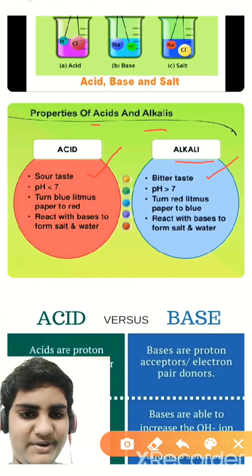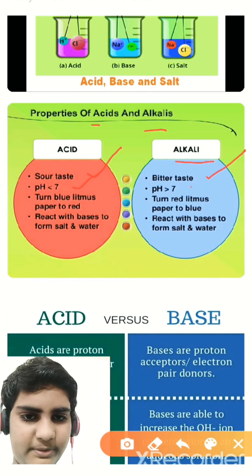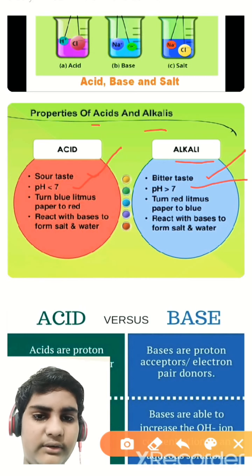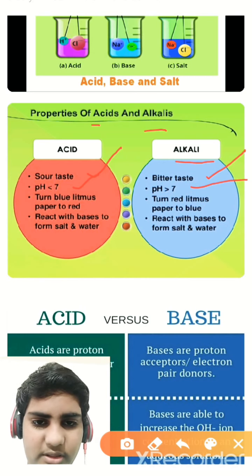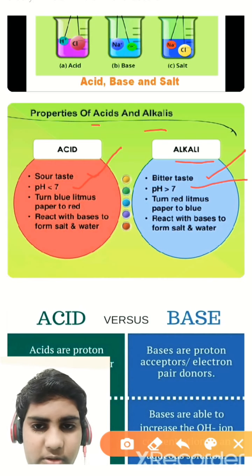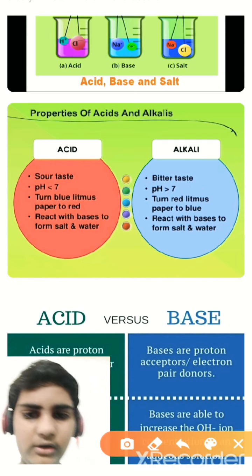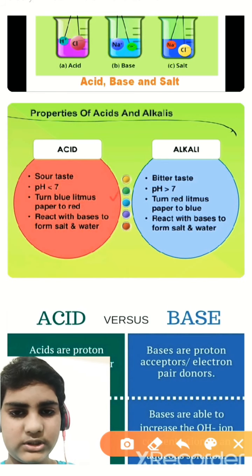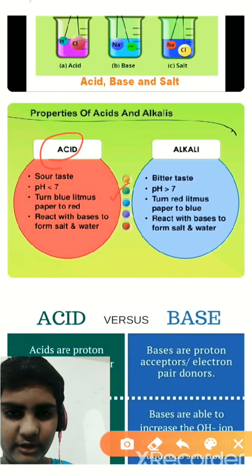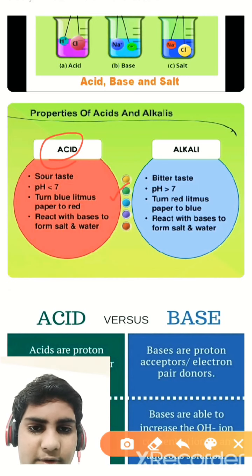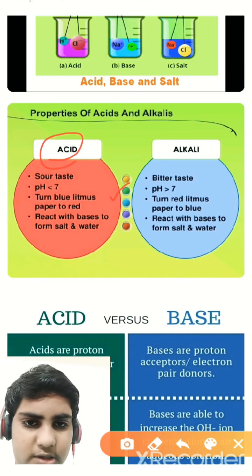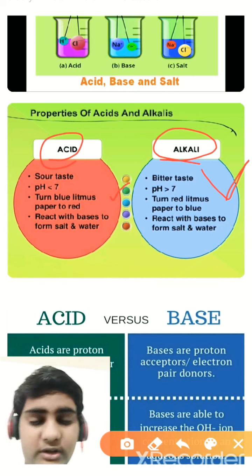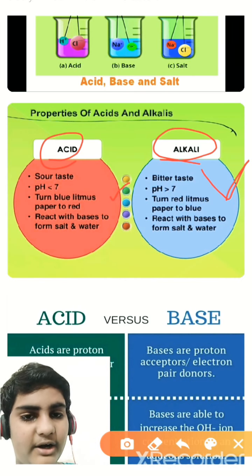Acids have sour taste and bases have bitter taste. Regarding pH: acids have a pH value less than 7 and bases have a pH value greater than 7 — we will see this in the next topic. Acids turn blue litmus paper to red, meaning when we put blue litmus paper into an acid it turns red.